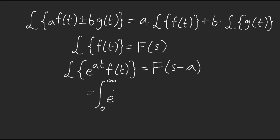When you combine e to the negative st with e to the at, it looks like e to the negative (s minus a)t — and that's how s minus a comes from.